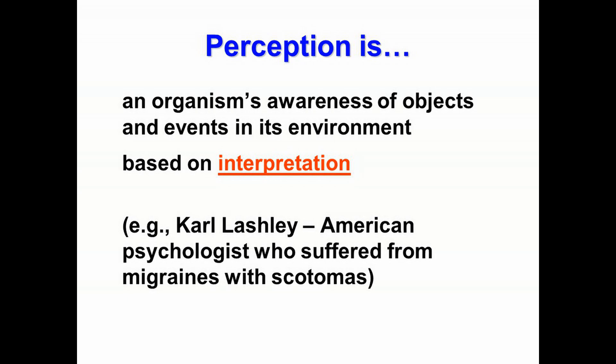Here is the definition of perception. Perception is an organism's awareness of objects and events in its environment, and it is based on interpretation. This is a higher level type of functioning than just answering questions like: did you hear the sound? Do you see the light? Is this sound louder than that sound? Sensation involves the detection and coding of stimuli, but perception is the interpretation of our experiences of those stimuli.